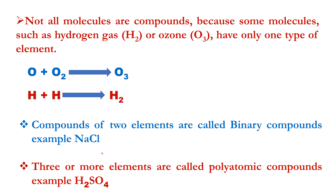When three or more elements are combined, that compound is called a polyatomic compound. An example is H2SO4. You can see it has three different elements: hydrogen, sulfur, and oxygen.